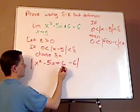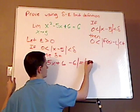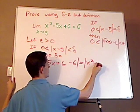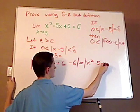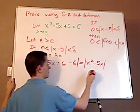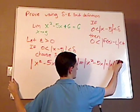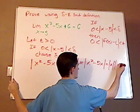Now, this is equal to absolute value of x squared minus 5x. Now, then, you have this equals absolute value of x times (x minus 5).